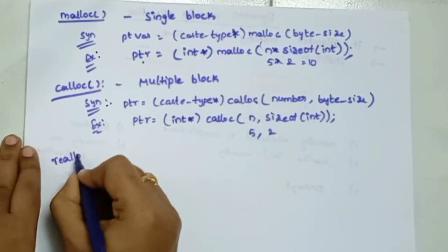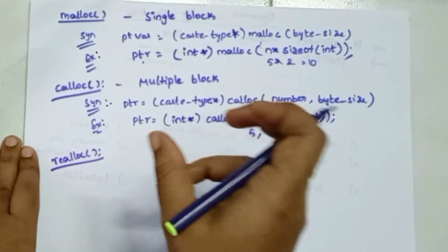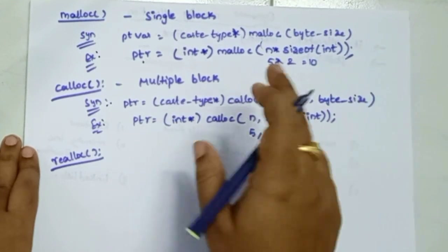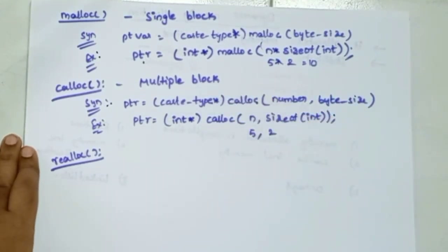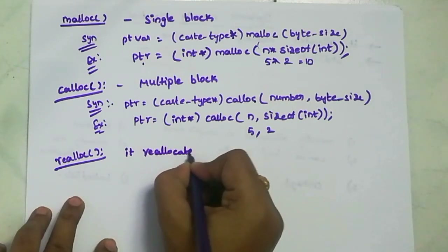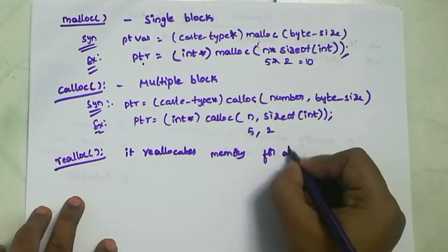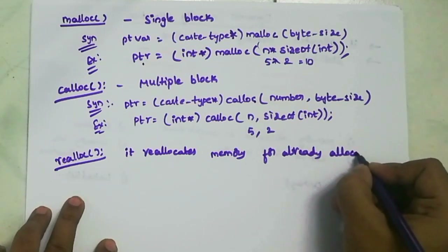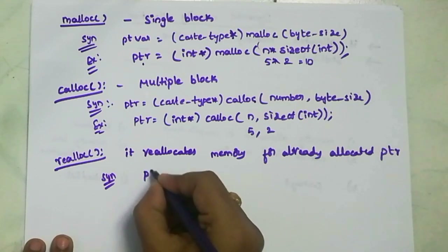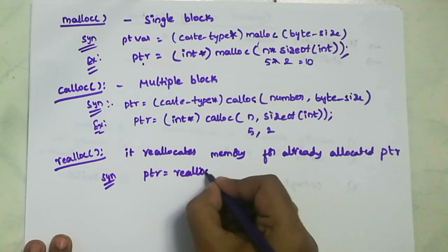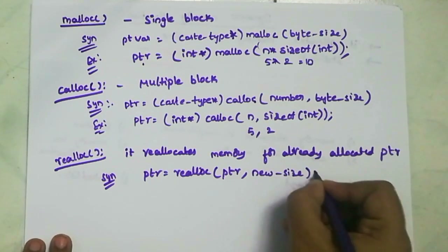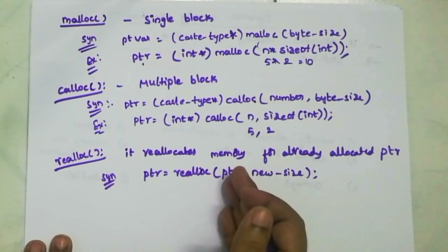Next is realloc. If you can't use the memory already allocated by malloc or calloc, realloc is used to reallocate that memory. It reallocates memory for already allocated pointers. The syntax is: ptr equal to realloc(ptr, new size). Here ptr is the previously allocated pointer variable and new size is the new amount of memory you want to allocate.